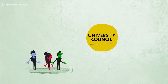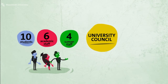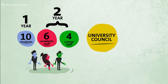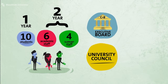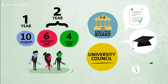Let's start with the University Council. The Council is composed of both students and staff. Student representatives serve terms of one year, staff serve two years. The University Council meets once a month with the Executive Board. They discuss topics relating to university policy, education and research.